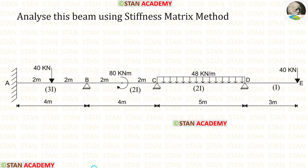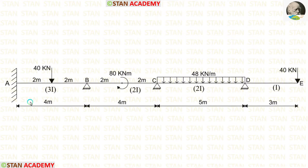Hello everyone, today we are going to analyze this beam using the stiffness matrix method. Before analyzing, let us see the beam. In this beam, there are three spans: span AB, span BC, and span CD. Also, there is an overhanging span DE.